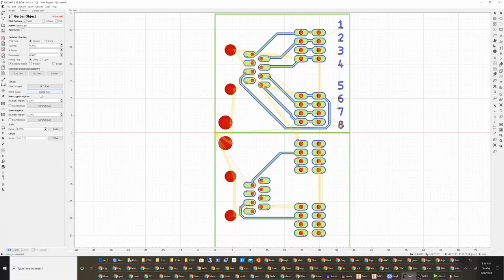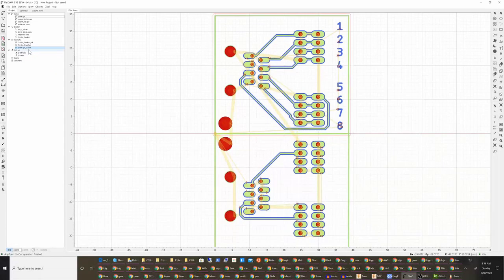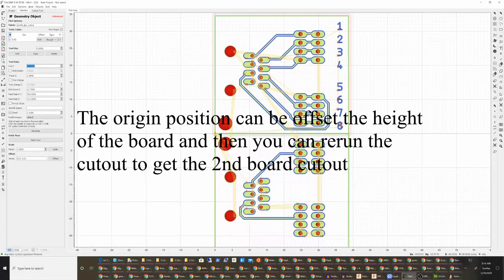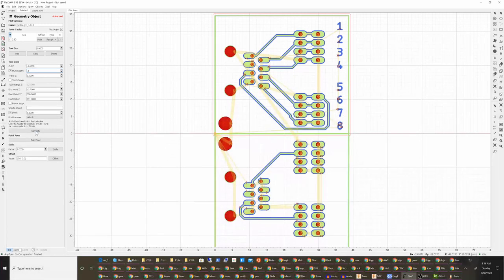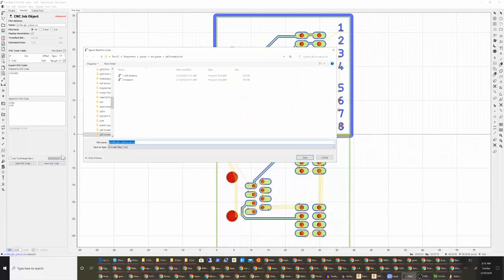I want to go ahead and use the cutout tool. Generate rectangular geometry, select my Z, 0.4, generate. We'll save this as top cutout.